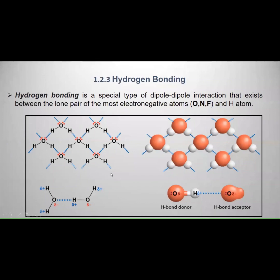Here is the water. Water is a very unique system. Why is water a very unique system? Because water can make two hydrogen bonds per molecule. This is a very strong interaction, and that's why water boils at 100 degrees Celsius — at a very high temperature compared to its smaller mass.